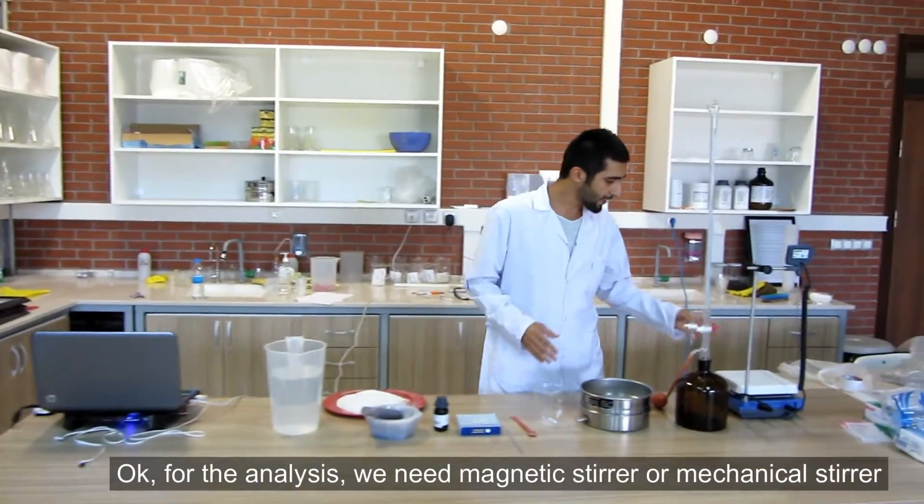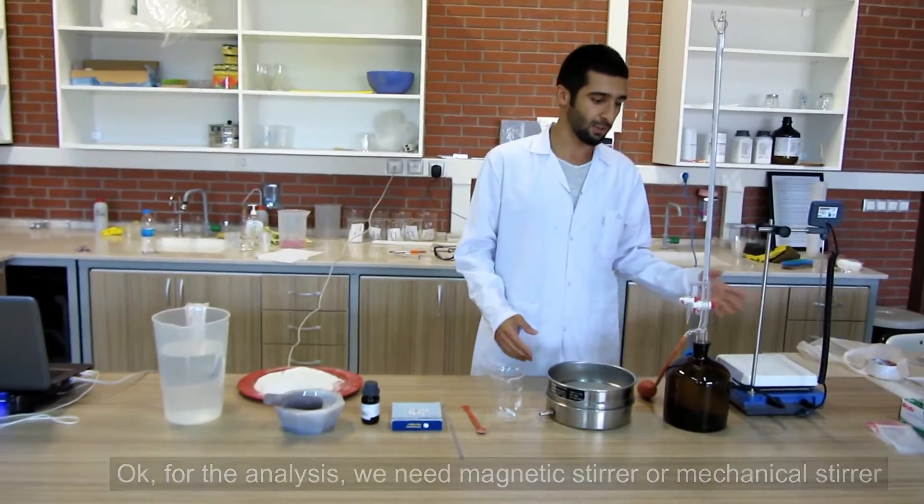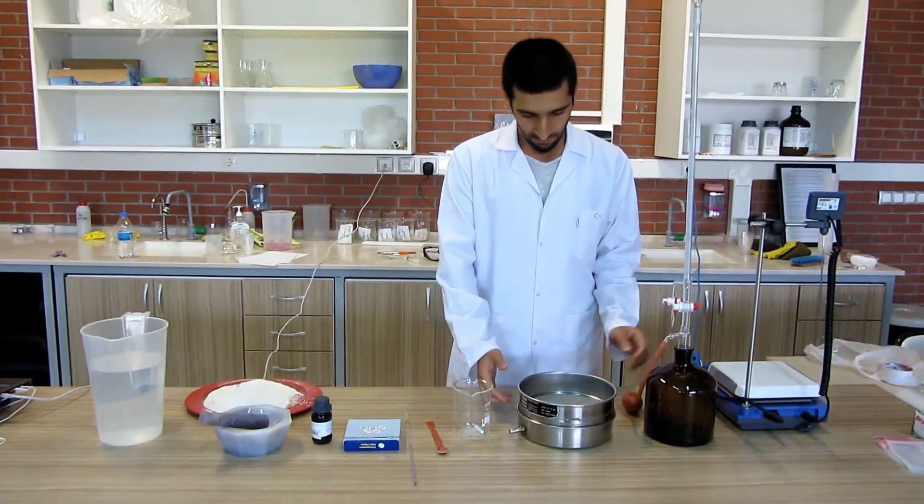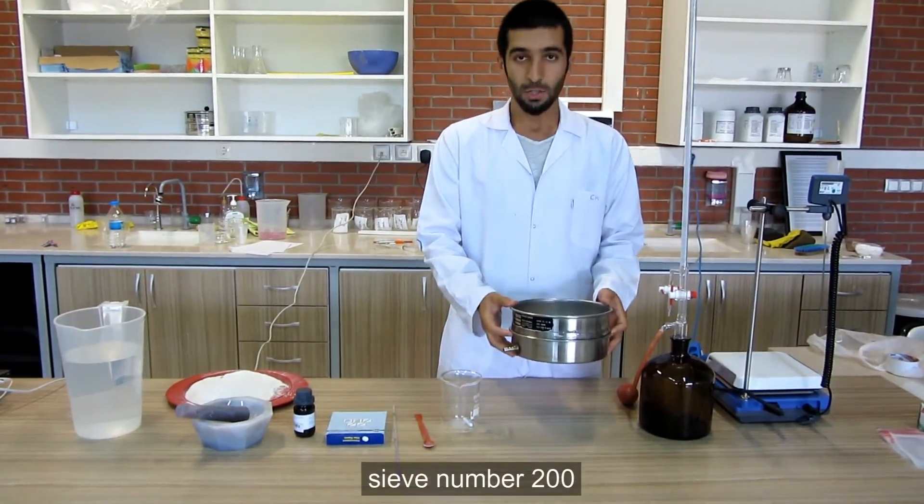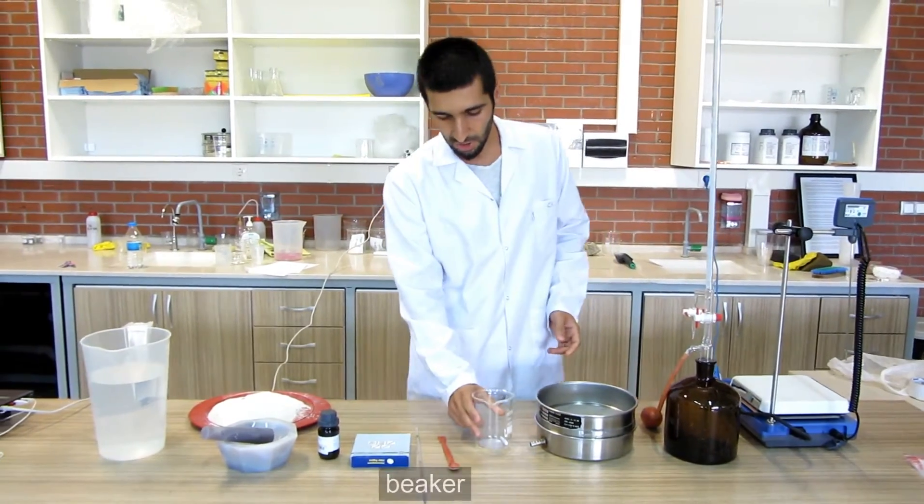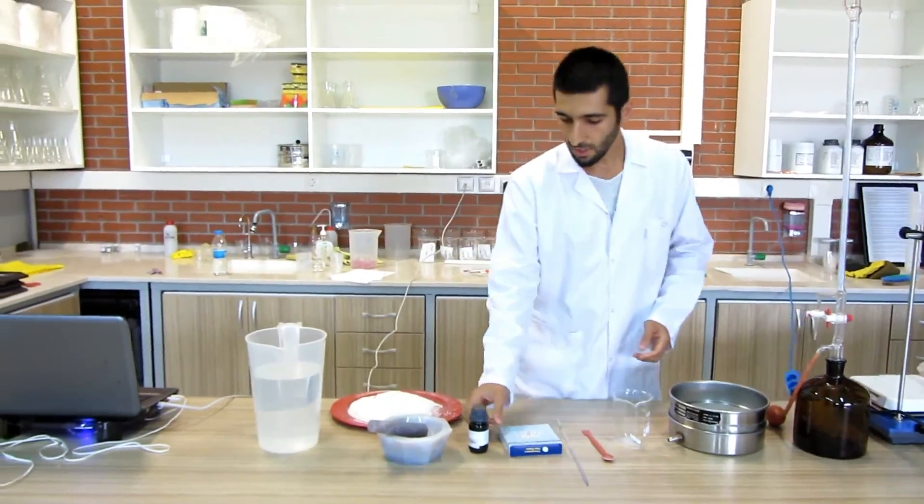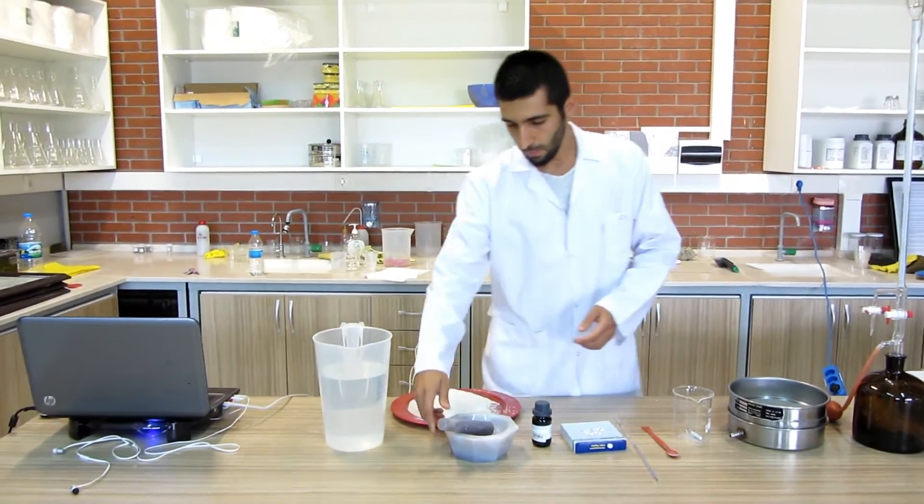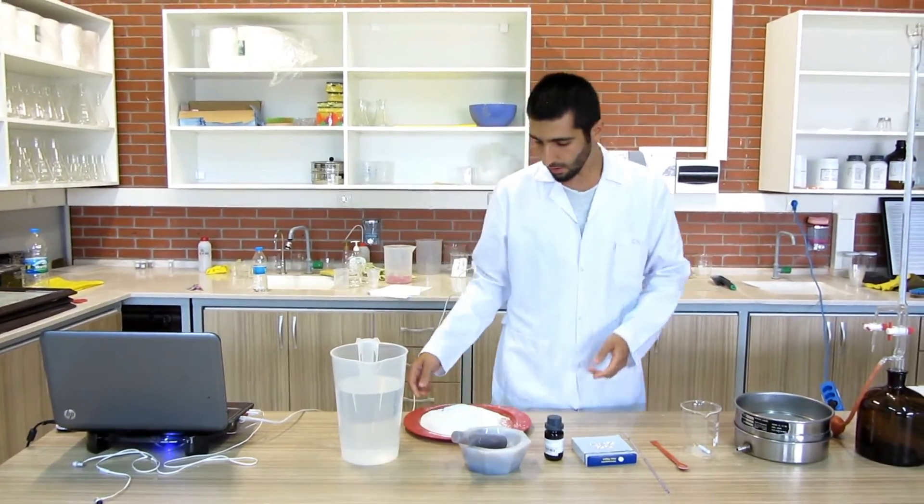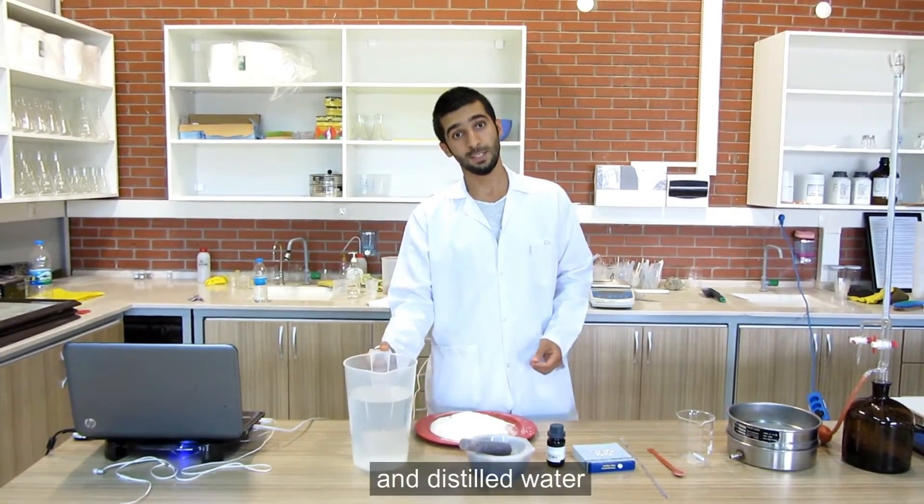For the analysis we need Magnetic Stirrer or Mechanical Stirrer, Burette, Sieve No. 200, Beaker, Spatula, Pipette, Filtered Paper, Methylene Blue, Agate Mortar and Pestle, Soil and Distilled Water.